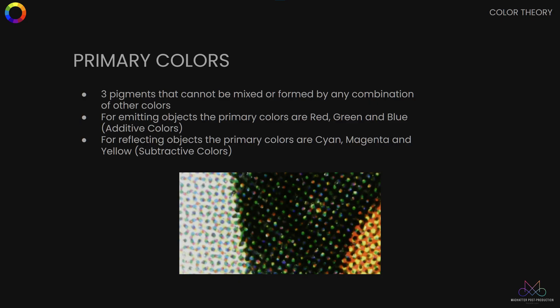A good example is a printer, which works by mixing magenta, yellow, and cyan. You've also probably experienced this when you were painting as a kid — the more you added colours together, the darker the paint would get, no matter what you did, unless you introduced white.